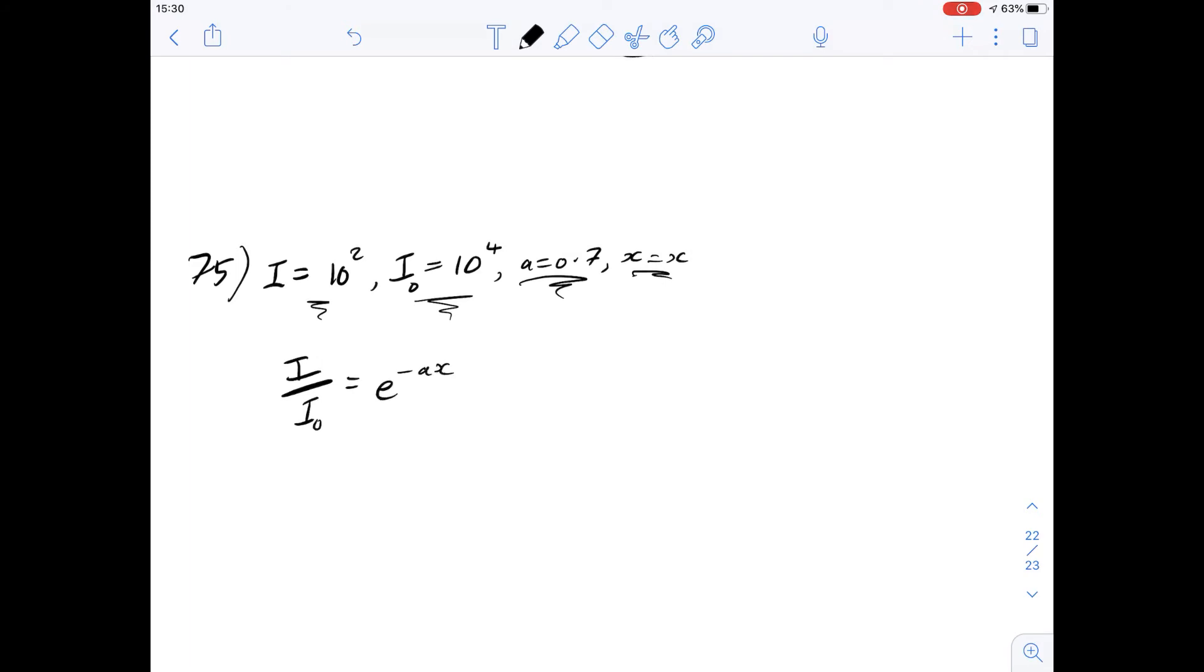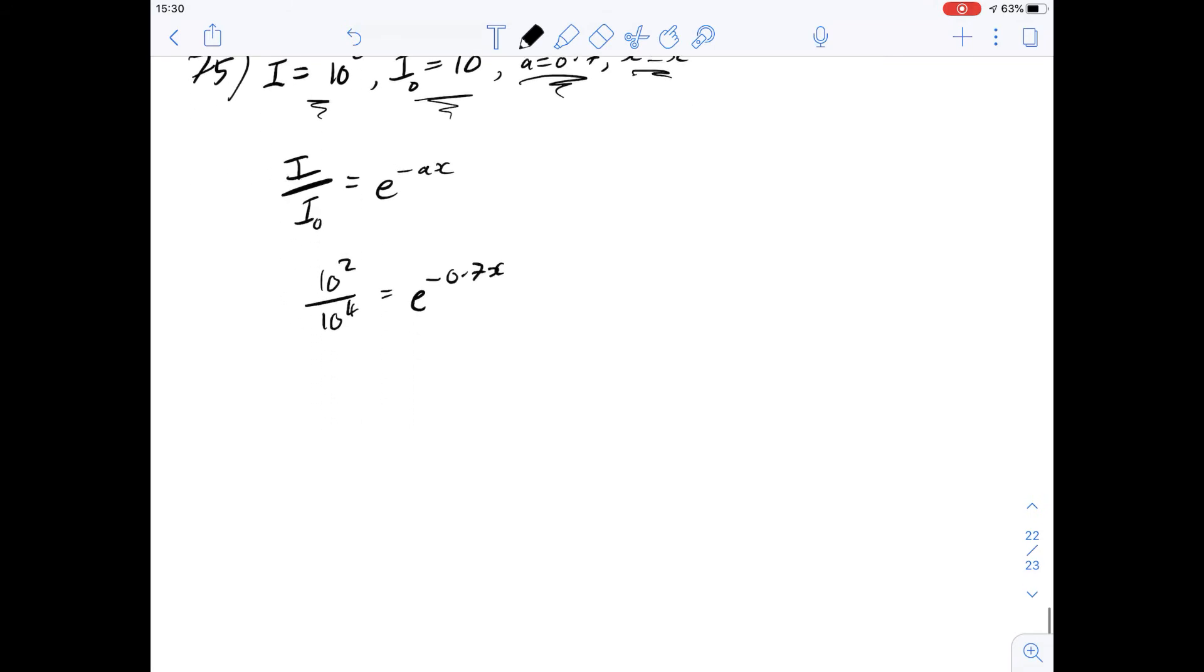So we have a ratio of 10 to the 2 over 10 to the 4 equals e to the minus 0.7x. So now we just need to work this out. We have 10 to the minus 2 which is what this fraction ends up as and this will be equal to e to the minus 0.7x.